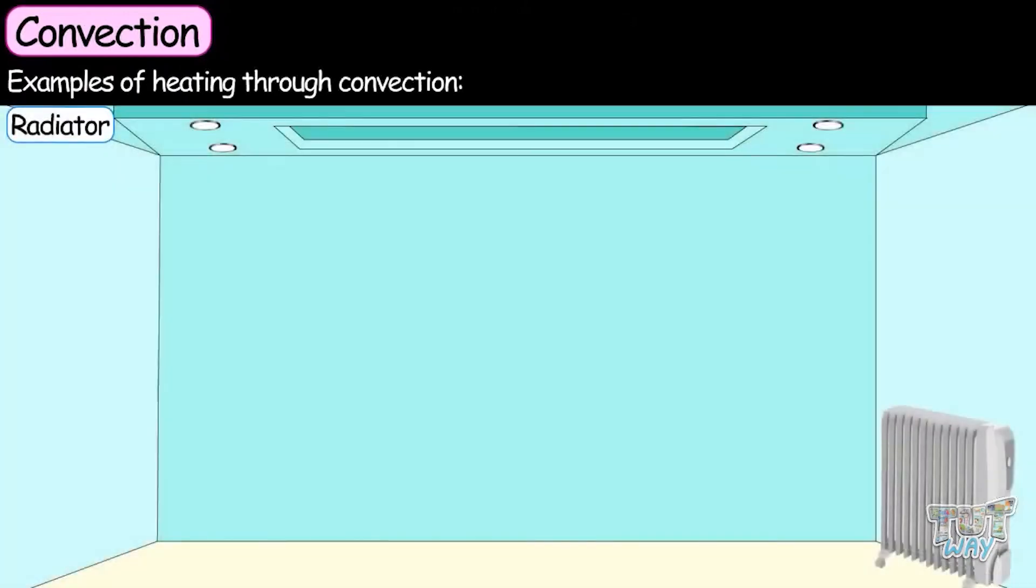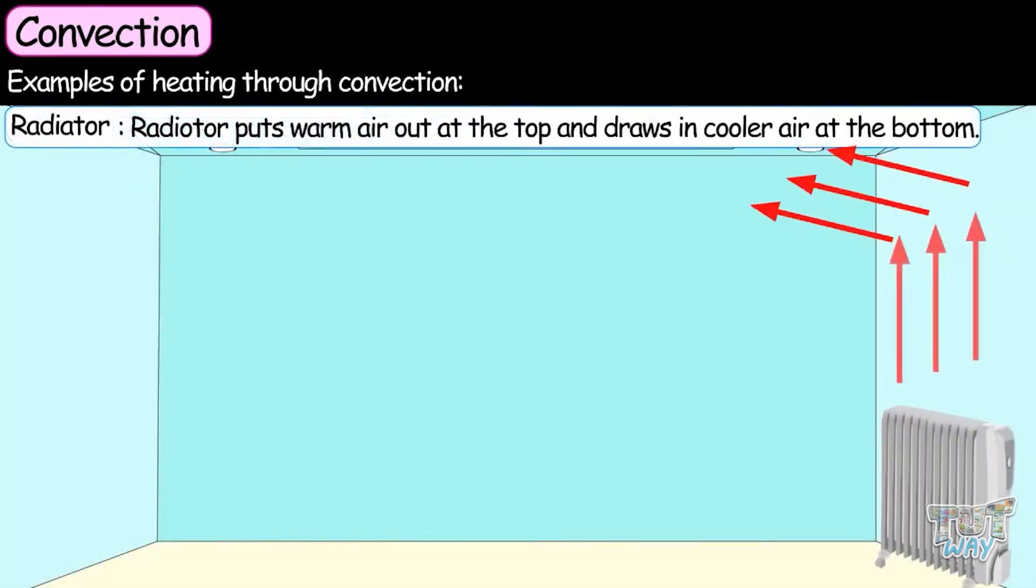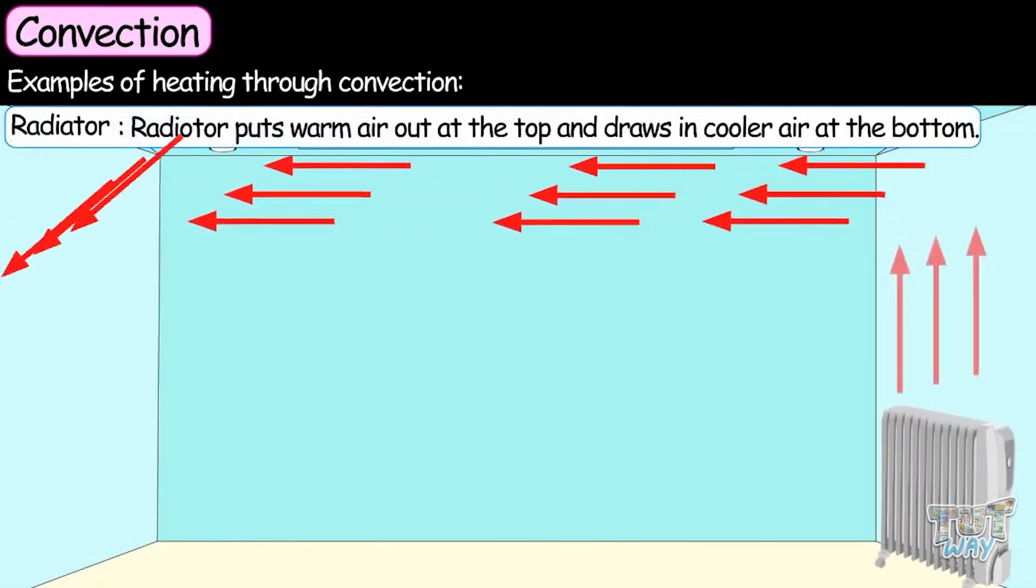Now let's have some examples of heating through convection. Radiator: the radiator puts warm air out of the top and draws in cooler air at the bottom.